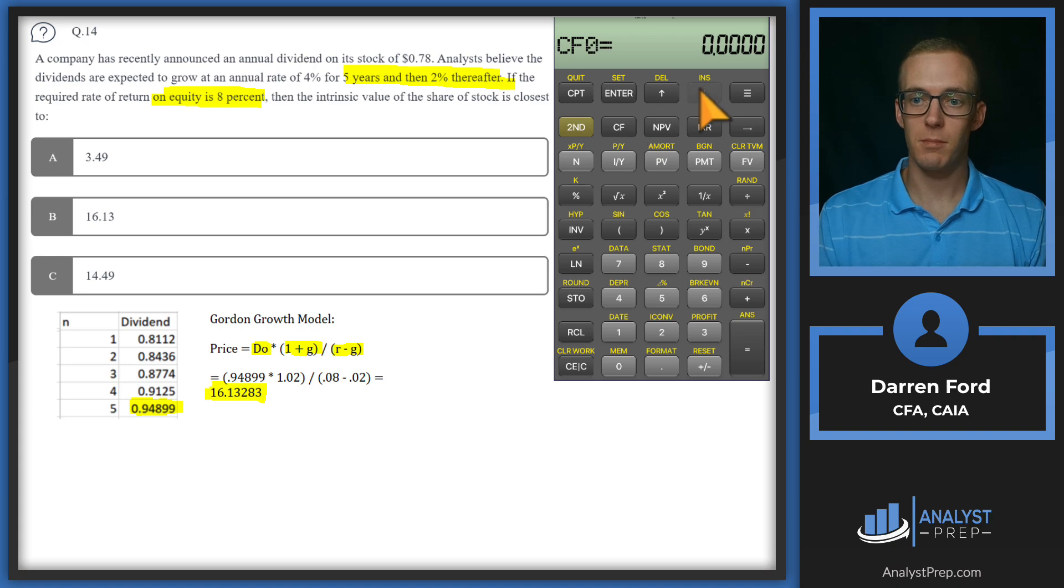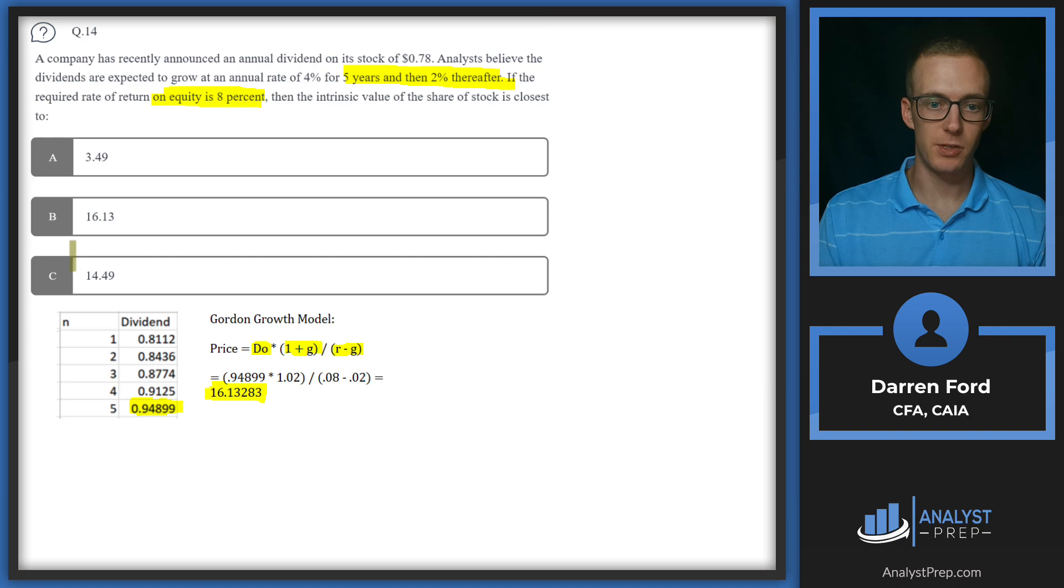I'm going to pull up the calculator now so we can walk through that. I've already got all the numbers punched in. We've got our 0.8112 as cash flow one corresponding there, 0.8436, 0.8774, 0.9125. And here's where we have the terminal value added. We've got the 0.94899 plus 16.13, which gives us 17.0818. Make sure there's no other stray cash flows in there. We'll go to our present value NPV calculation. We've got the discount rate of eight percent. We'll scroll down, compute, and we get 14.46 percent. There's probably just some differences in rounding there. So we can pretty confidently go with 14.49, Answer C.